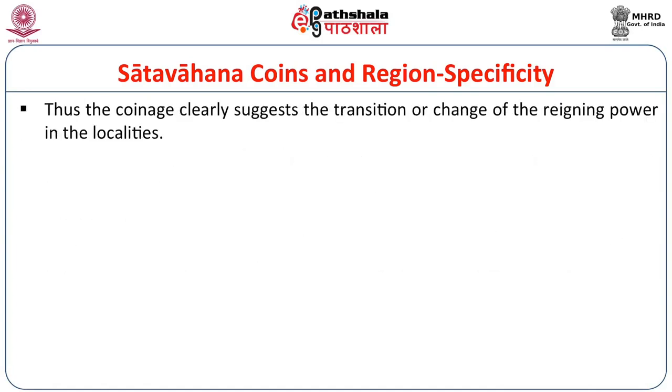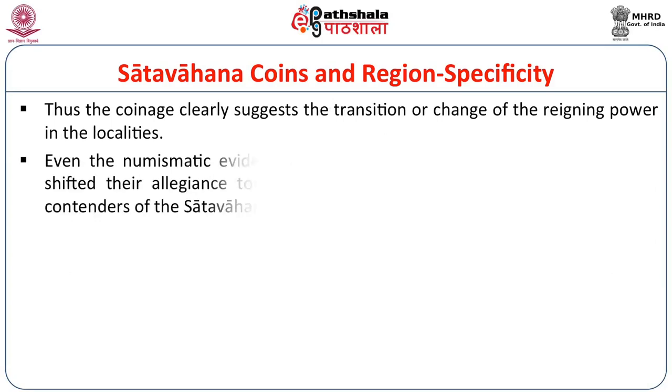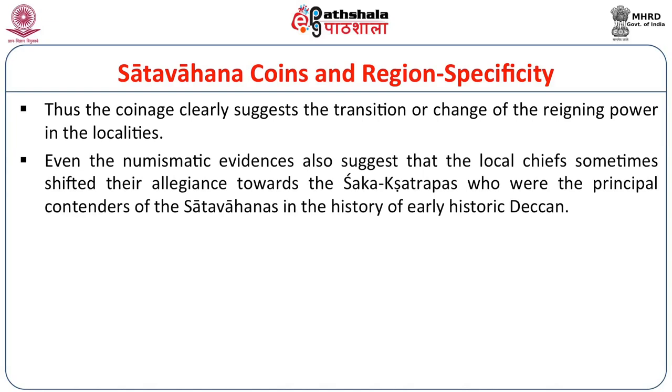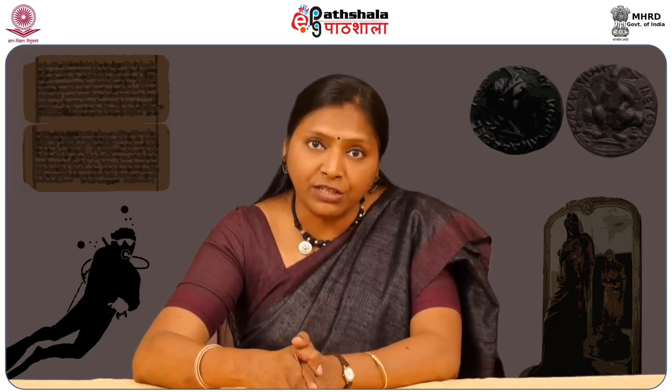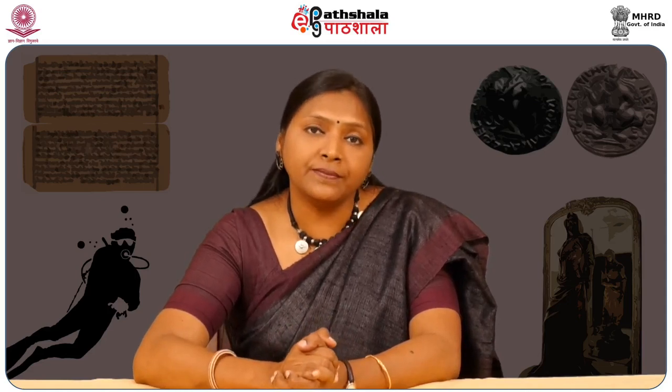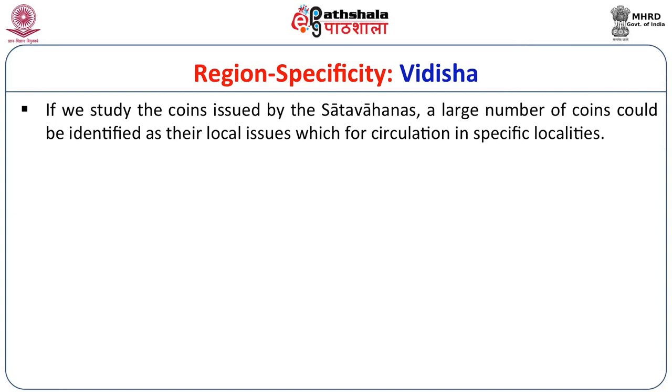The coinage clearly suggests the transition or change of reigning power in localities. Numismatic evidence even suggests that local chiefs sometimes shifted their allegiance to the Satavahanas and at other times to the Shakas. At the early historic site of Junar, coins of the Junar type were issued by the Satavahanas, the Shakas, and even a local ruler — showing that the region was under a locality chief who shifted allegiance between the two powers.